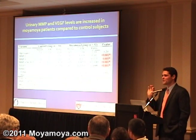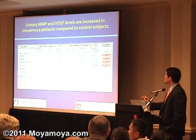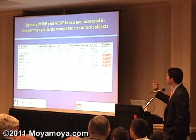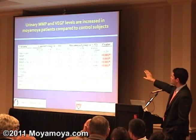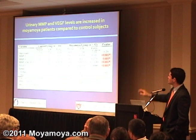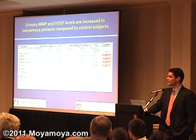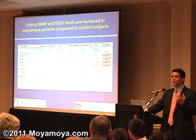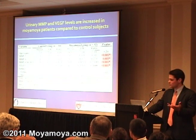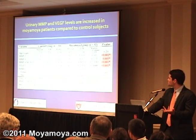The idea here is: are there statistically significant differences when you look at numbers of patients? We had 32 moya-moya patients and 14 control patients. We compared them across the way, and we saw very nice differences — basically showing we could use a urine test to show that there was a difference between those that had moya-moya and those that didn't.